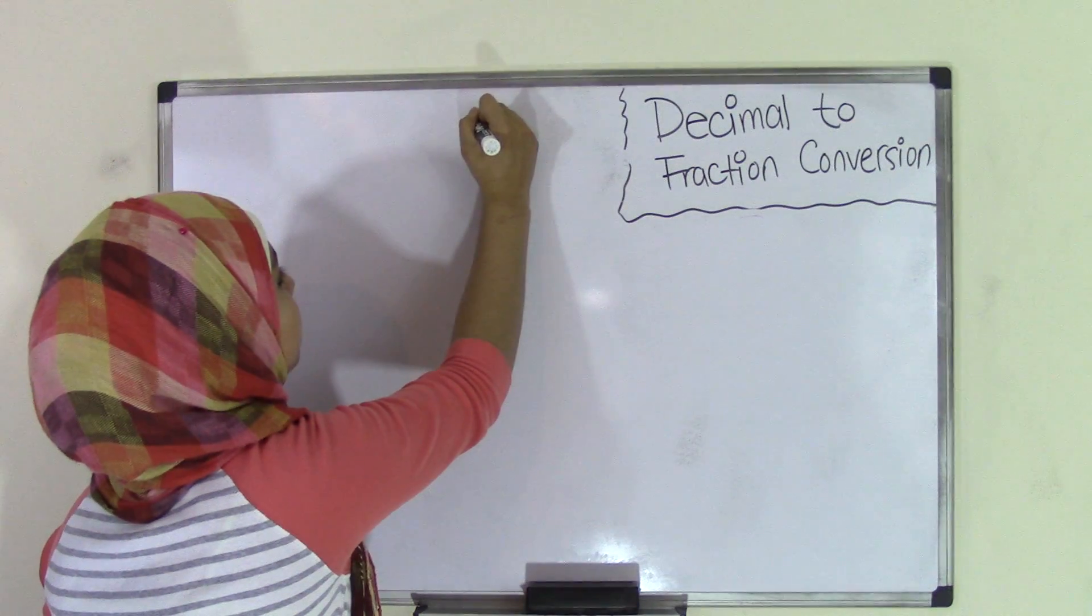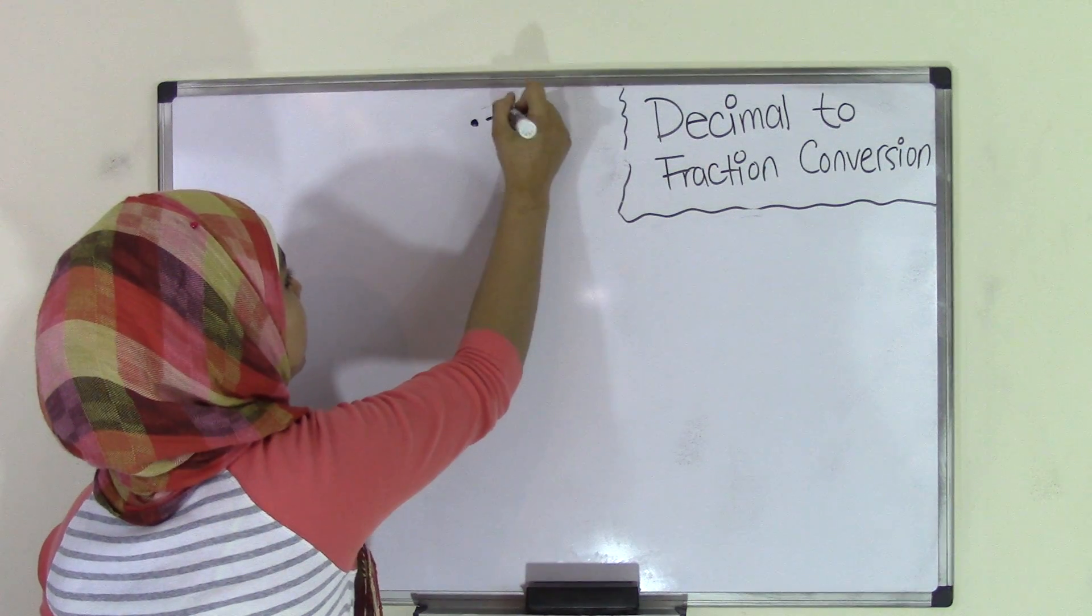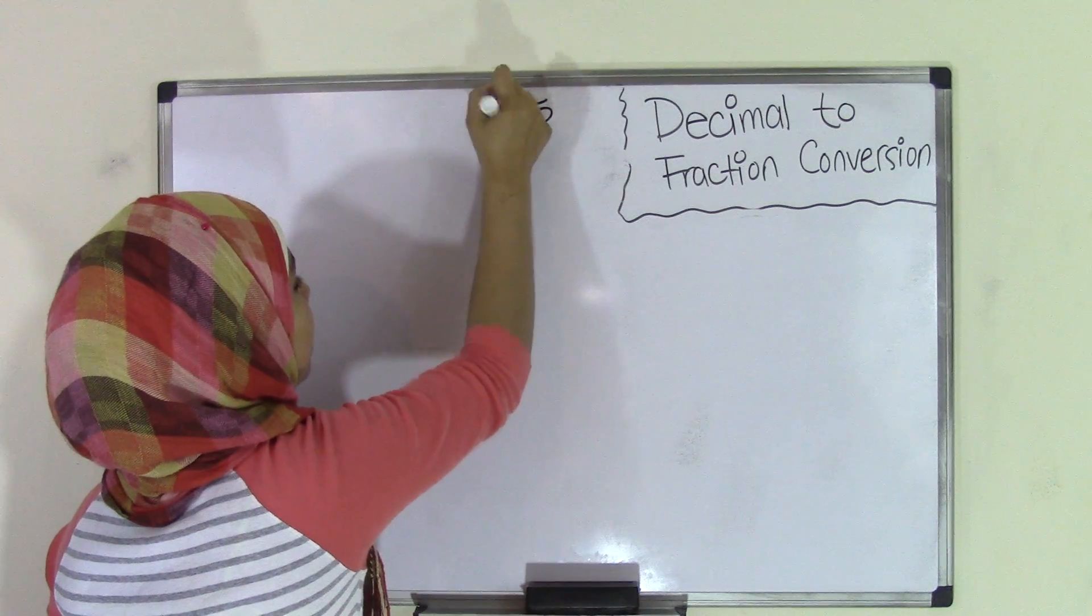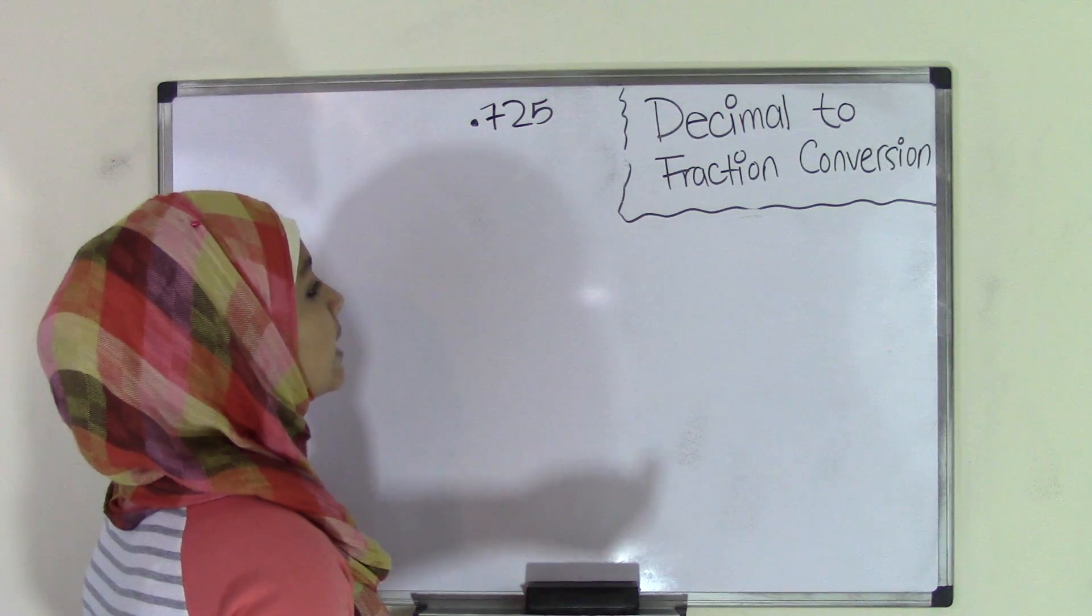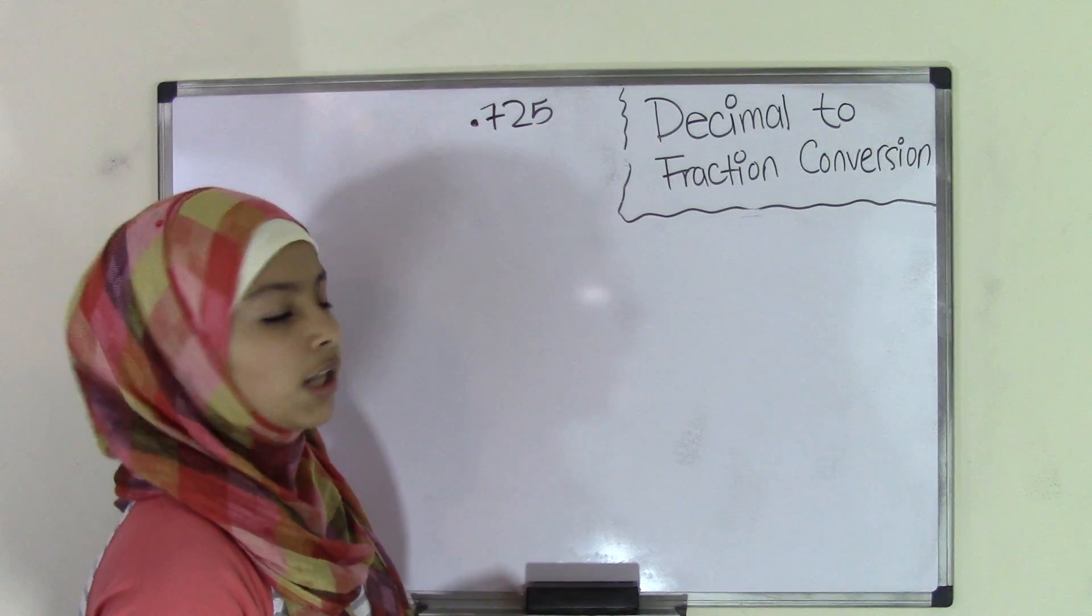So let's say I have the decimal number 0.725. Now, remember that the first digit from the decimal point, which means to the right of the decimal point, is in the tenths place value.